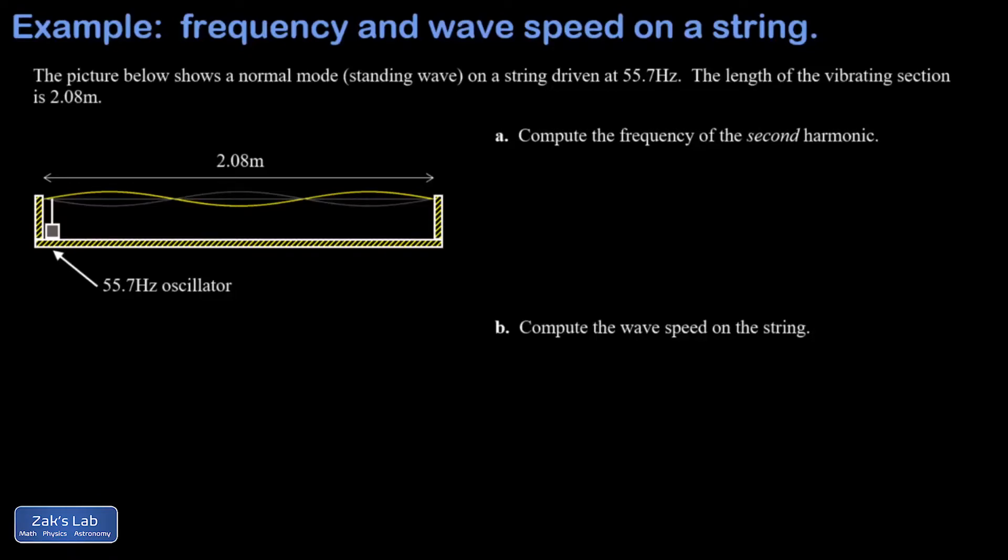In this video we're looking at a normal mode on a string, and the normal mode that we're looking at here is actually the third harmonic. I can tell because I see three anti-nodes, and we arrive at this third harmonic when we drive the string at 55.7 hertz. In part A, we're asked to find the frequency of the second harmonic.